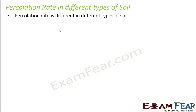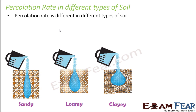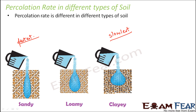The rate of percolation depends on soil composition and therefore differs across soil types. In sandy soil, the percolation rate is the fastest because it has more large particles, creating bigger empty spaces through which water quickly passes deep inside. The percolation rate is the slowest in clayey soil because the empty spaces are extremely tiny. For loamy soil, the rate is intermediate.